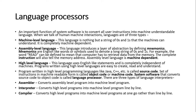Assemblers translate assembly language. Interpreters translate one statement at a time for high-level languages. The compiler converts or translates a whole program at a time for high-level languages. The translation is always from high-level or assembly language into machine language — the zeros and ones — which is the language of the computer.